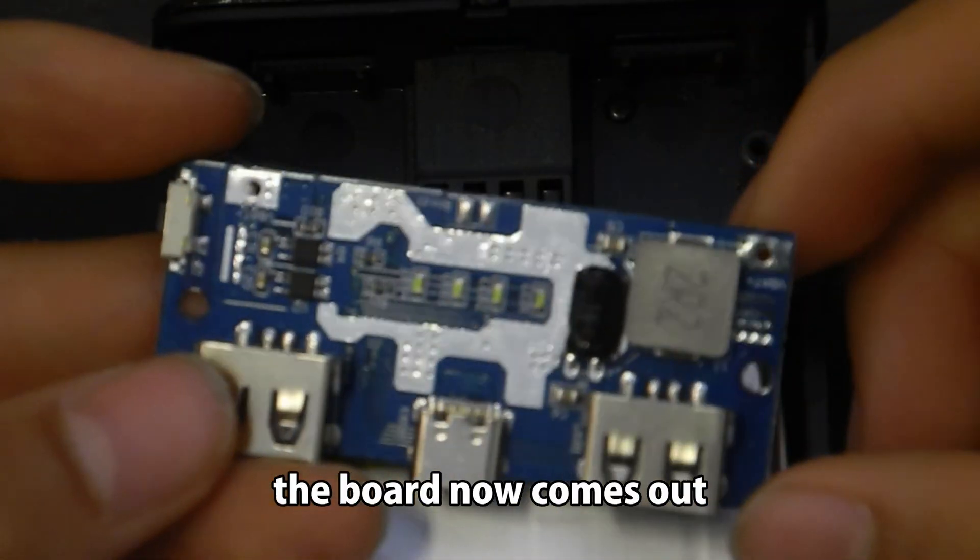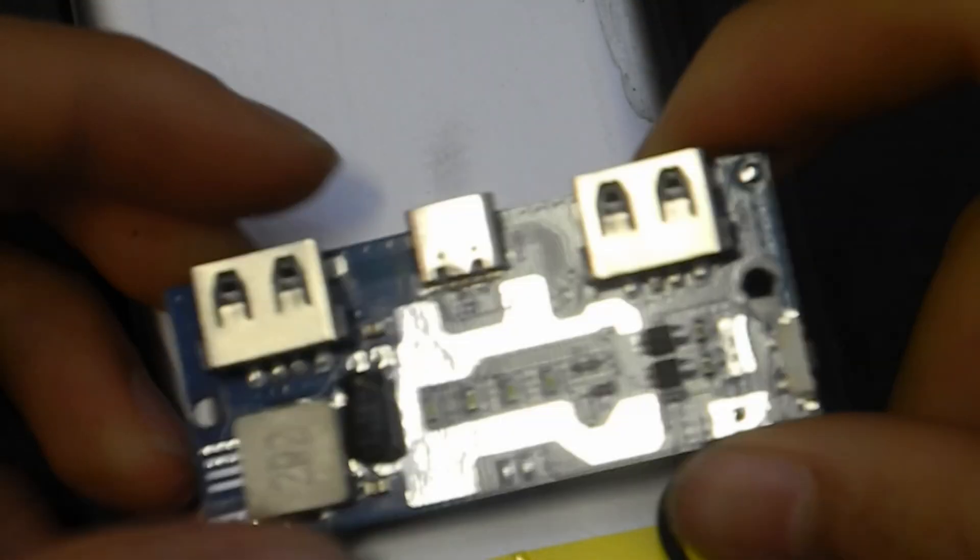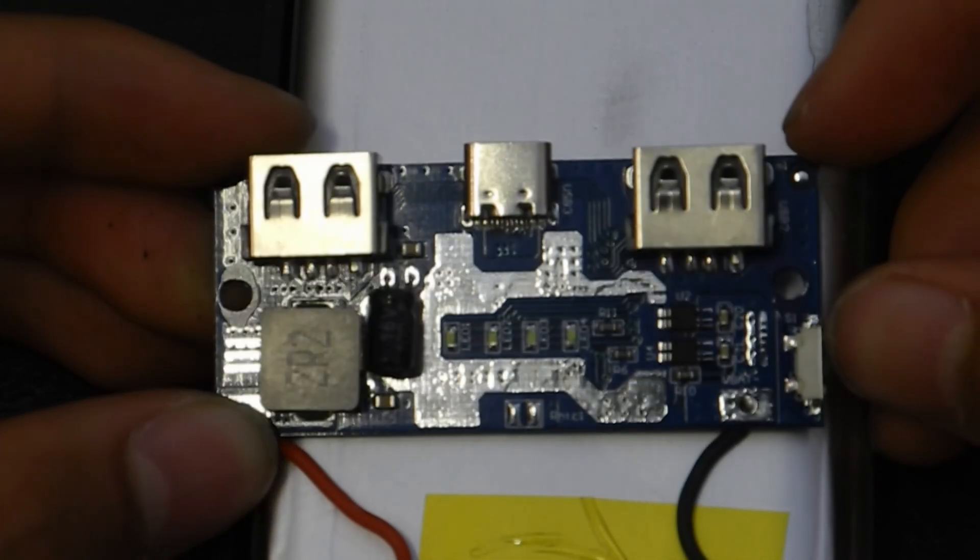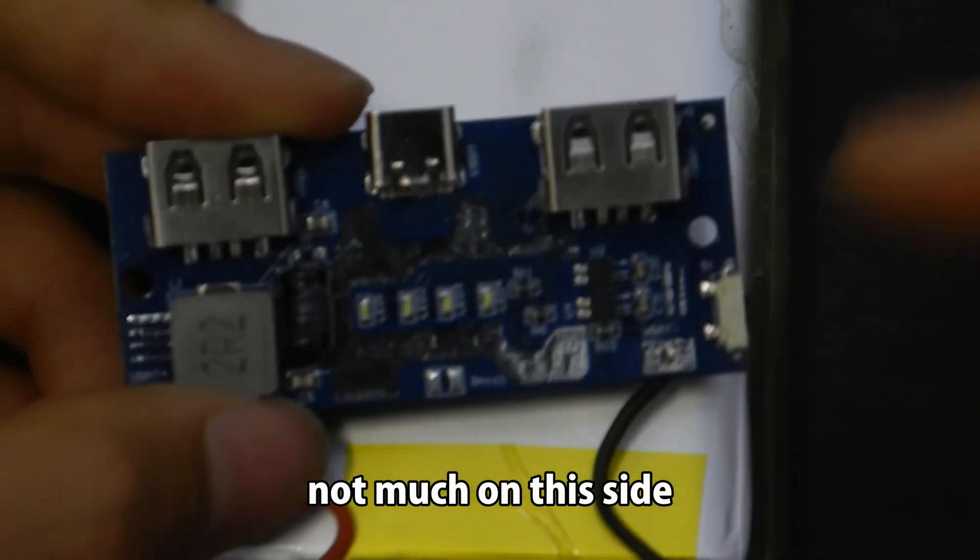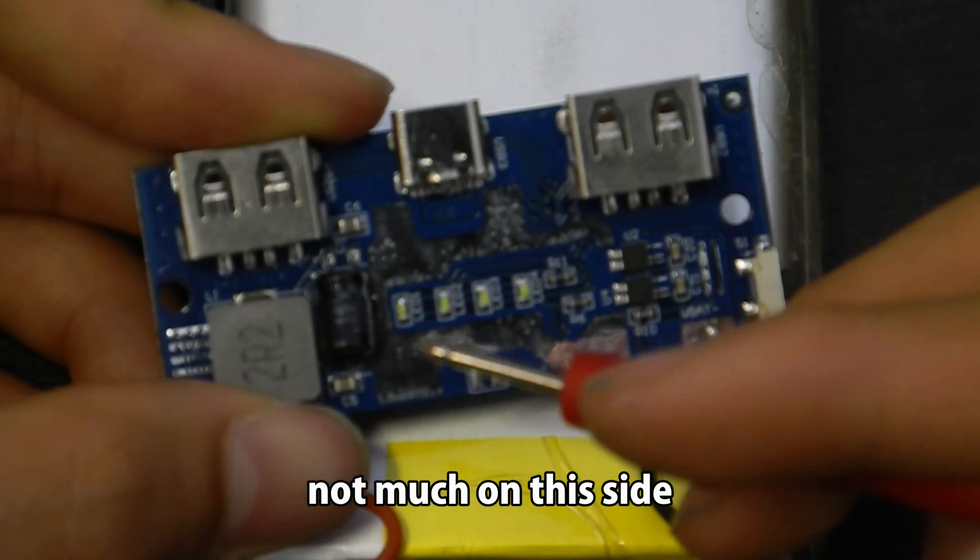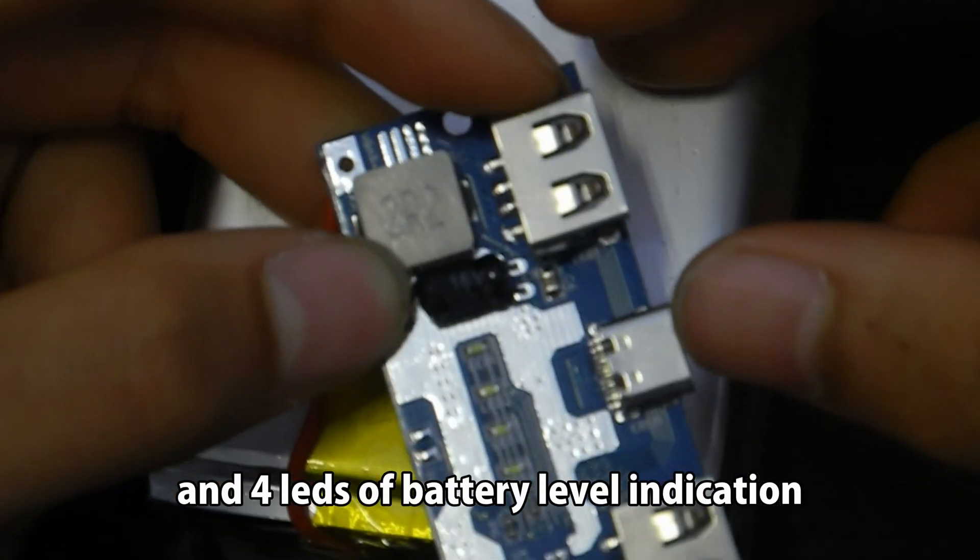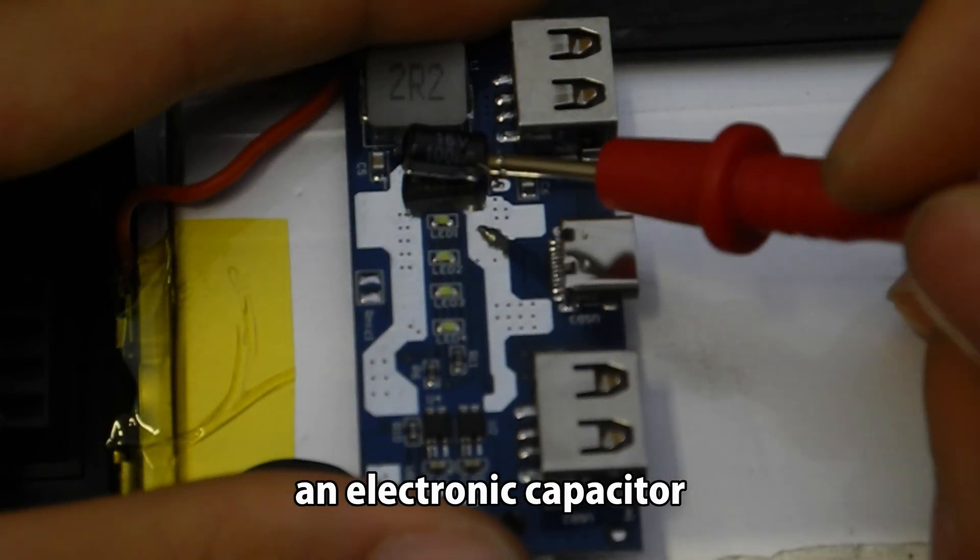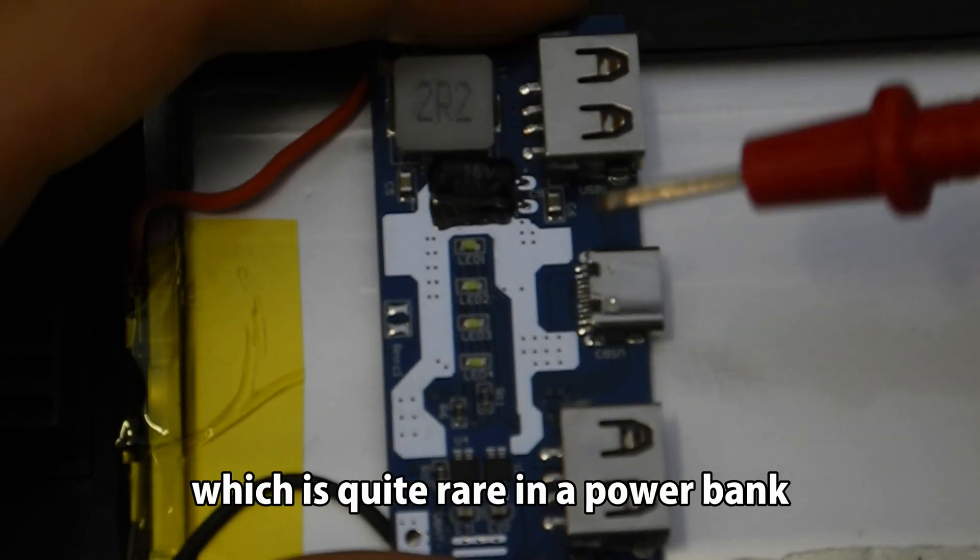The board now comes out. Not much on this side. Just a button and four LEDs of battery level indication. An electrolytic capacitor which is quite rare in a power bank.